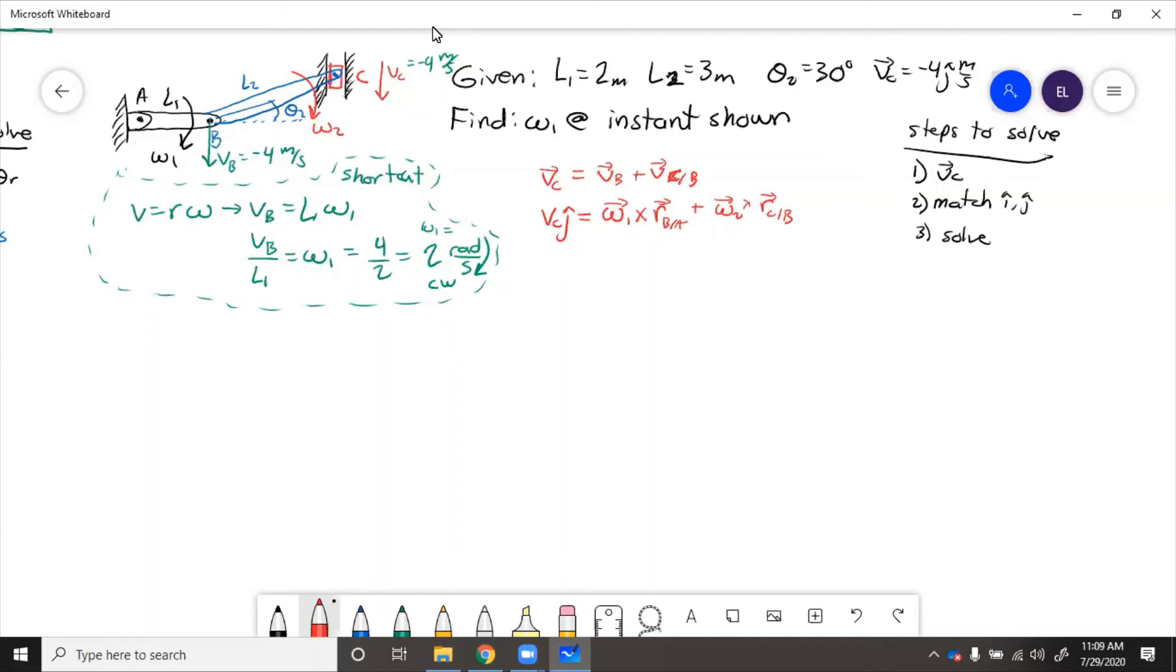So then vc j hat equals i j k, 0 0 omega 1, and then r b with respect to a. Well if we look at this, it goes l1 in the x direction. We'll put our coordinate frame on here. So this is y, this is x, and so that distance is just going to be l1 in the x direction, which is 2, 0 in the j, 0 in the k.